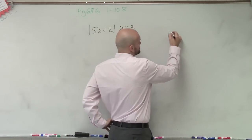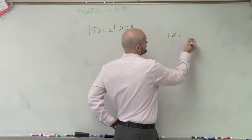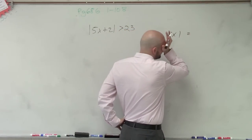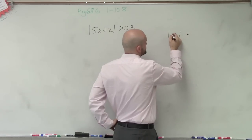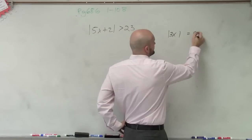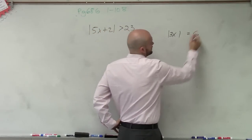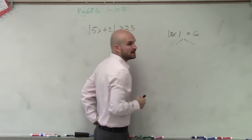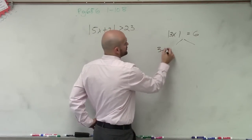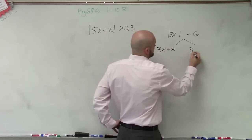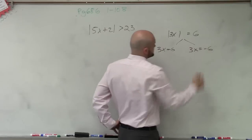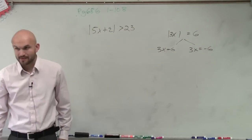If I said the absolute value of x is equal to, let's just do 3x, is equal to 6. This is just a quick little example. We set it up into two different terms. We could do 3x equals 6 and 3x equals negative 6, right? Do you guys remember that?